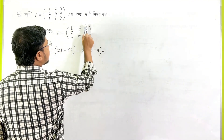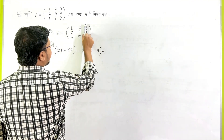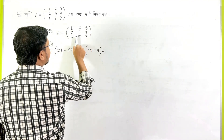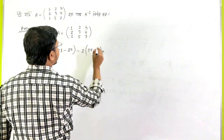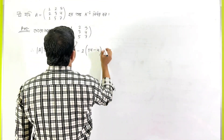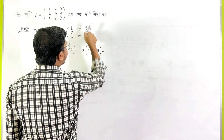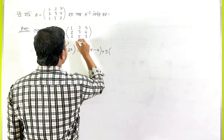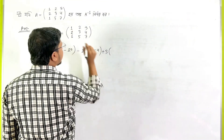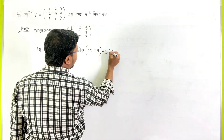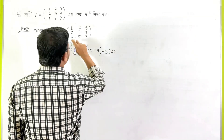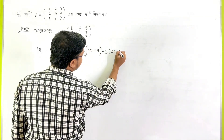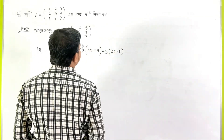First column is the second column. So, 2, 5, 1, 3. So, 3 is the third column. So, 5, 2, 10 minus 3.